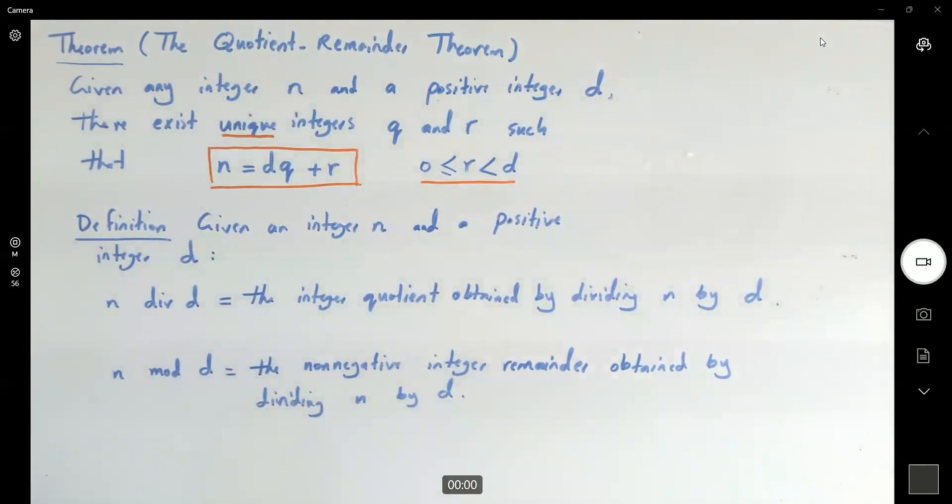Very good. So for simplicity, you can write them this way. You can say that n div d equals q, and n mod d is equal to r if and only if n is written as dq plus r, and your r is bounded between 0 and d.